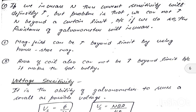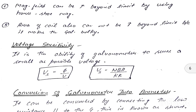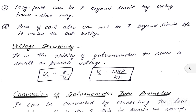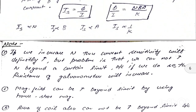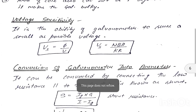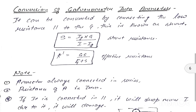Voltage sensitivity: the ability of a galvanometer to sense as small a voltage as possible is known as its voltage sensitivity. Formula: voltage sensitivity = φ/V = NBA/KR. Voltage sensitivity is directly proportional to number of turns, magnetic field, and area, and inversely proportional to the restoring constant K and the resistance of the galvanometer R.